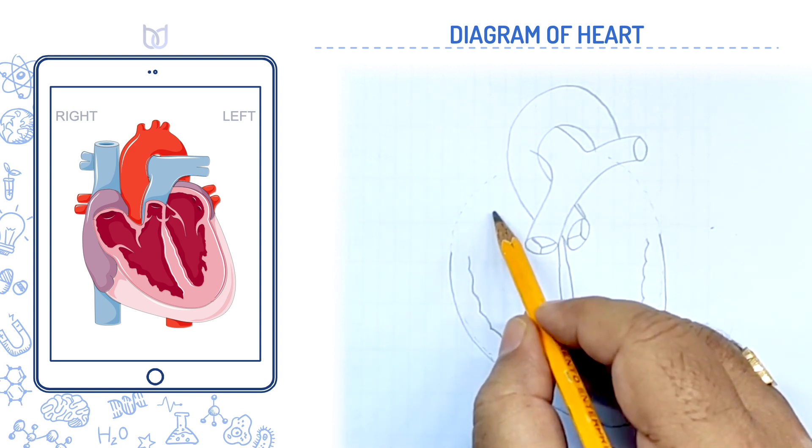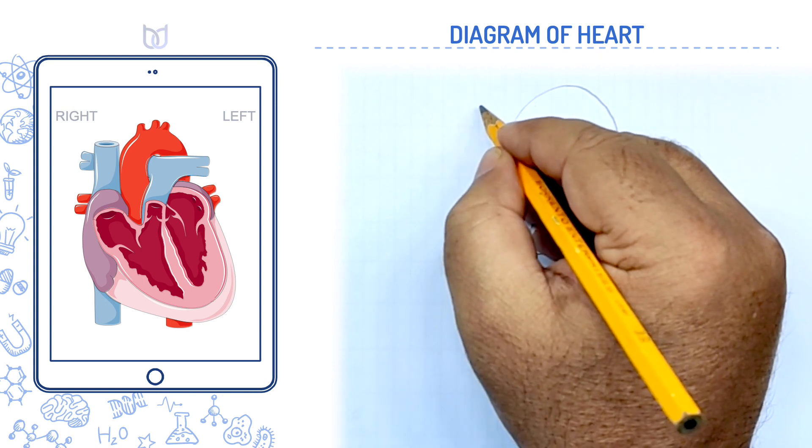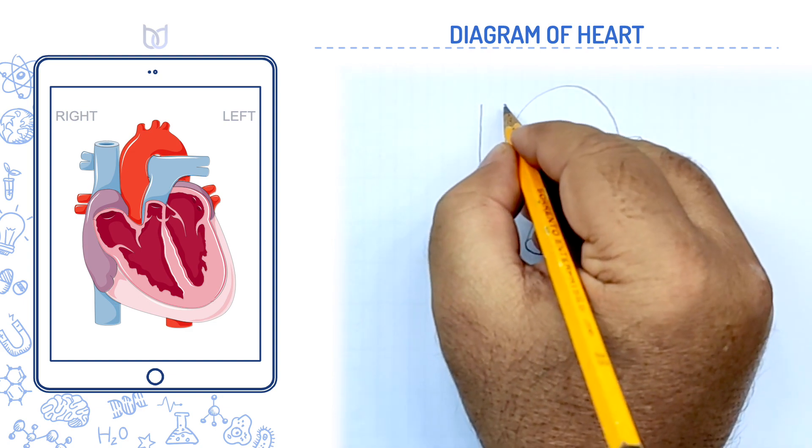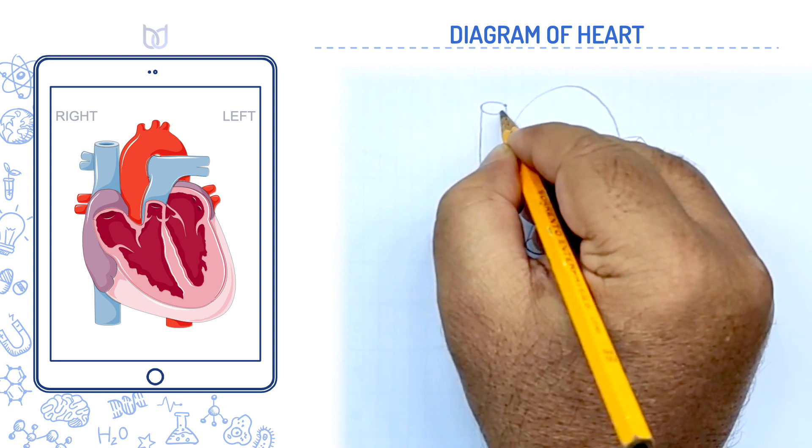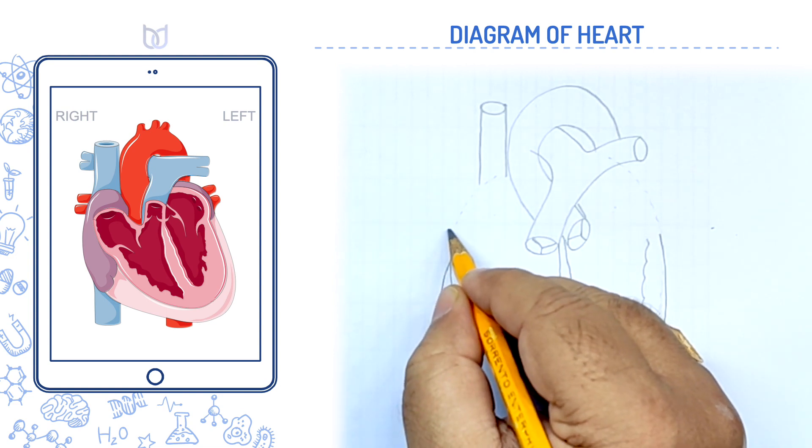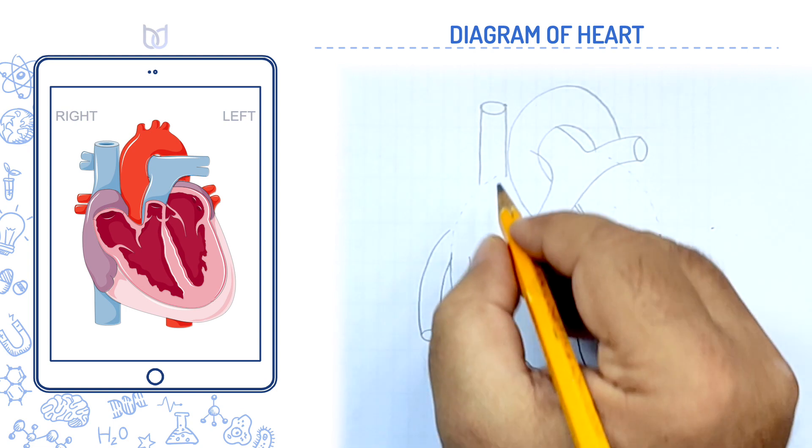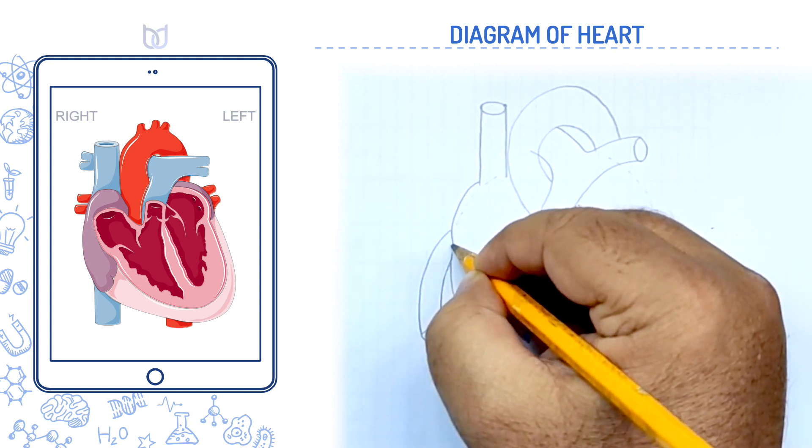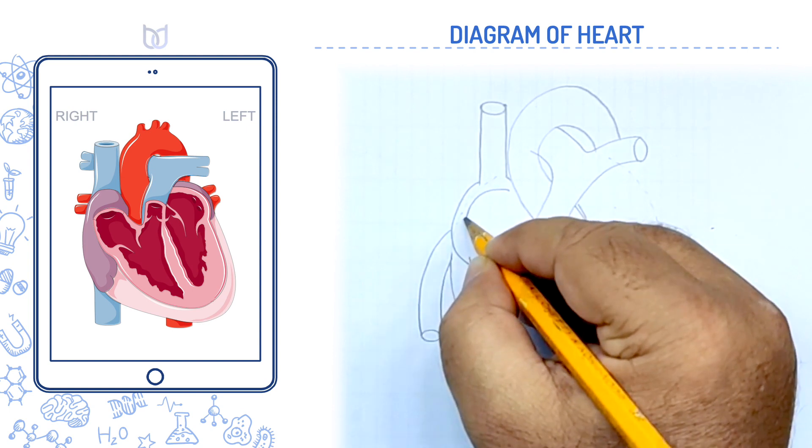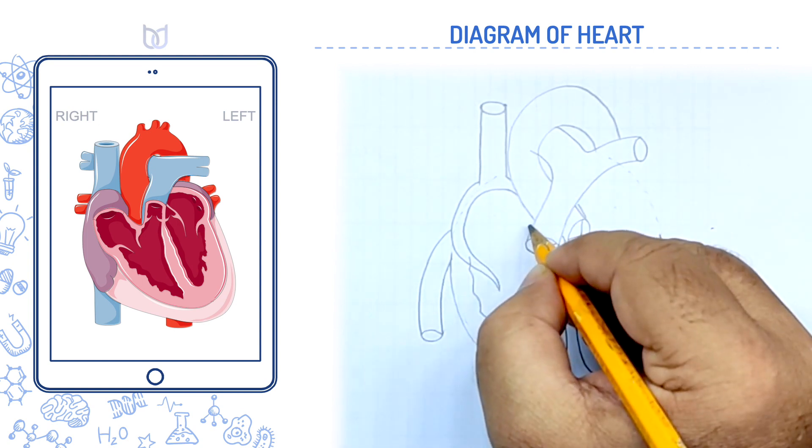The ventricle region is now almost complete. Now come to the two auricles. The right auricle or right atrium here, left auricle here. In the right auricle, we see the opening of two large veins. These are called vena cava. One superior vena cava coming from upper side and another inferior vena cava from lower side. These two vena cava open into the right auricle by separate openings.